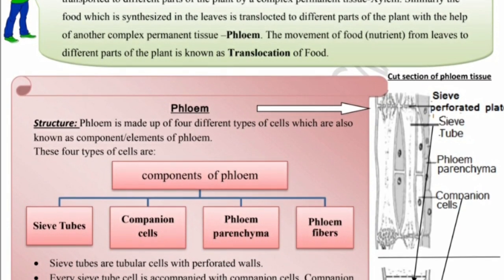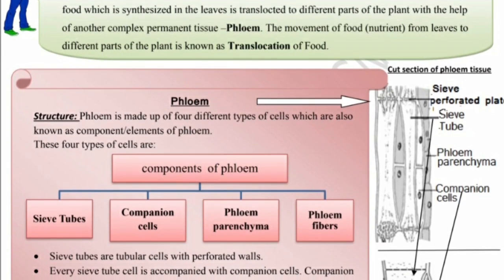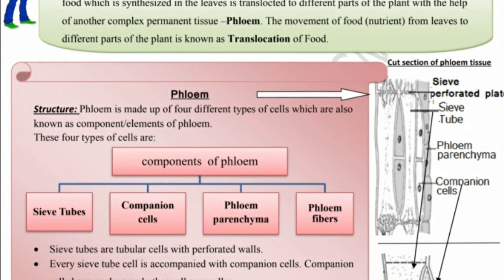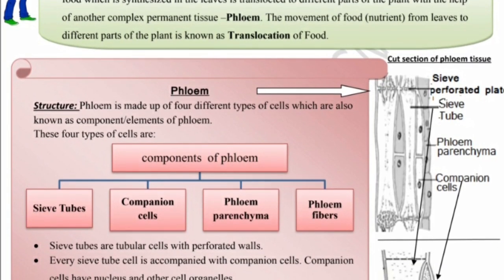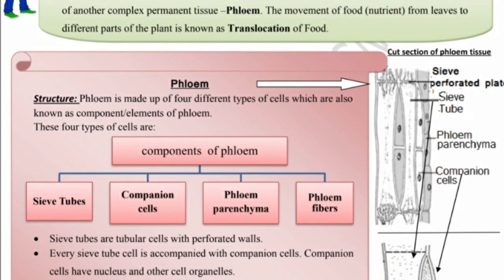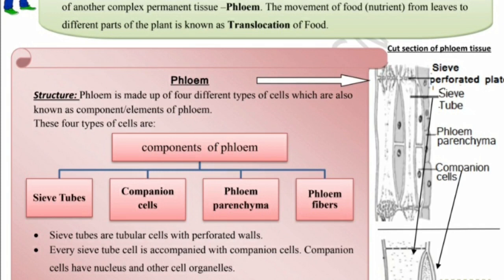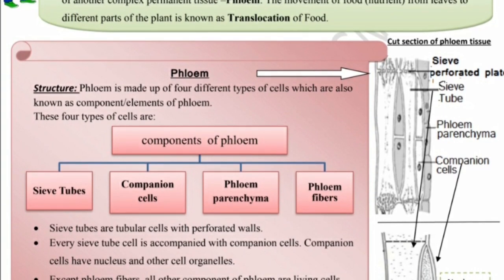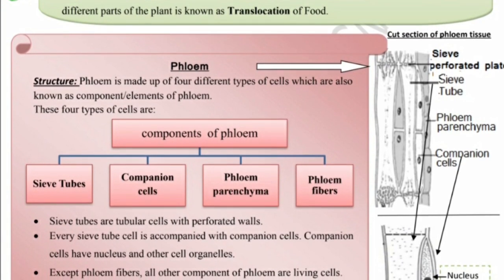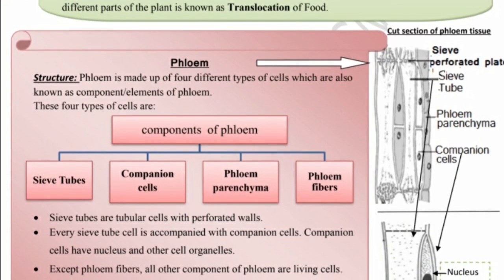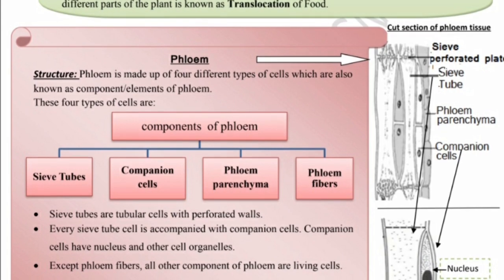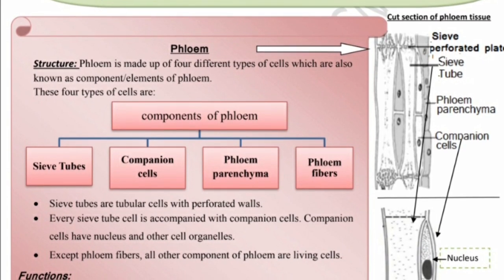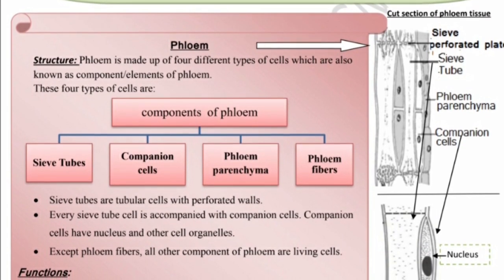Phloem structure: Phloem is made up of four different types of cells, which are also known as component elements of phloem. These four types are: sieve tube, companion cell, phloem parenchyma, and phloem fibers.